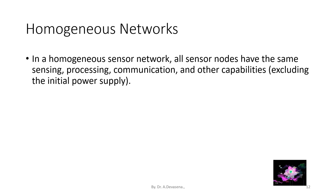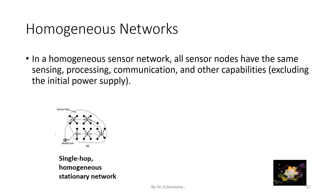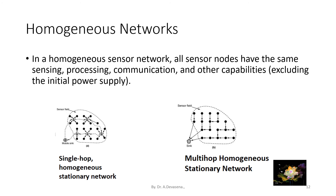Homogeneous networks: in a homogeneous sensor network, all sensor nodes have the same sensing, processing, communication, and other capabilities, excluding the initial power supply. Here is a representation of a single-hop homogeneous stationary network, and here is another representation of a multi-hop homogeneous stationary network.